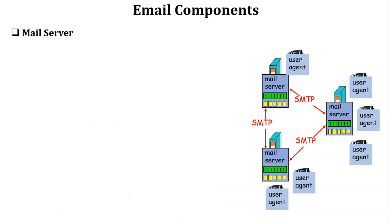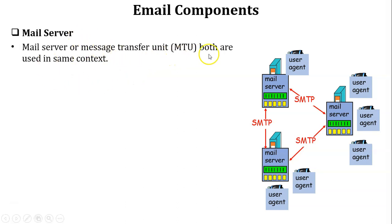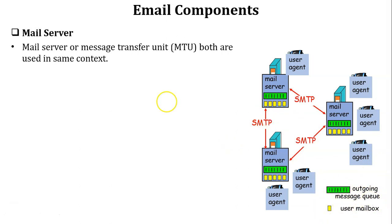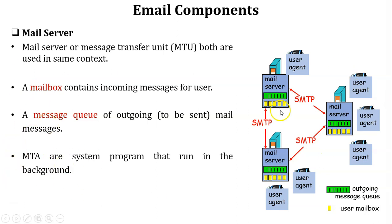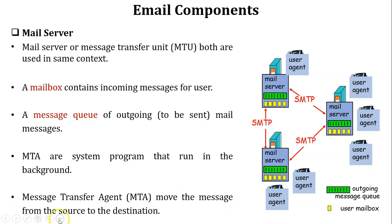The next email component is the mail server. Mail server and Message Transfer Unit (MTU) are used in the same context. In the diagram, the green color box shows the outgoing message queue and the yellow color box shows the user mailbox, which contains incoming messages. Each mail server has a Message Transfer Agent (MTA) — a system program that runs in the background of the mail server, executing all email server functionality. The main purpose of the MTA is to move messages from source to destination.